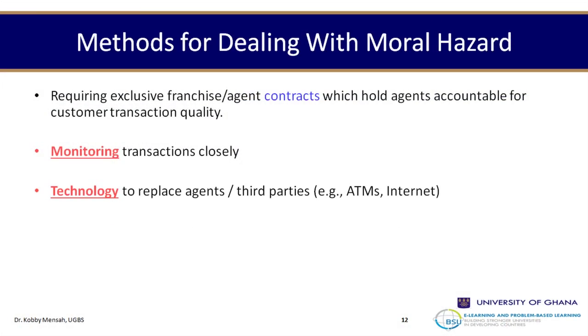We also have the use of technology — are we able to successfully replace agents or third parties with technologies? We've been successful with ATMs, but we haven't done away with interpersonal or personal selling. The ATM is there, but we still use interpersonal means of selling and distributing financial products. We may not entirely remove the human face from financial services distribution.